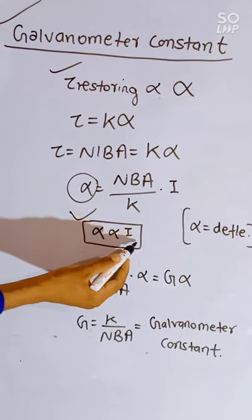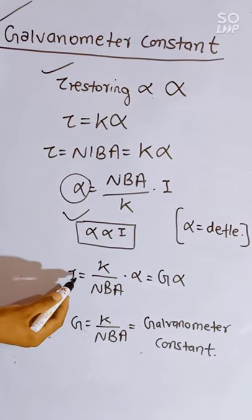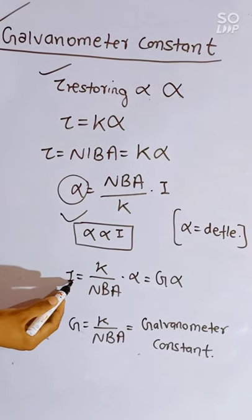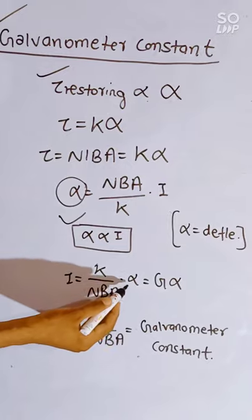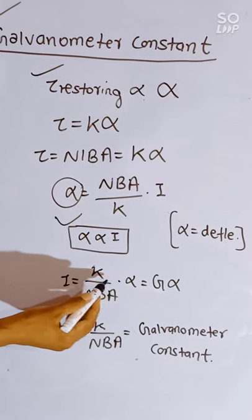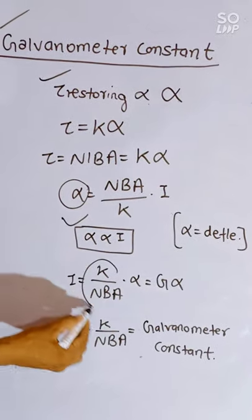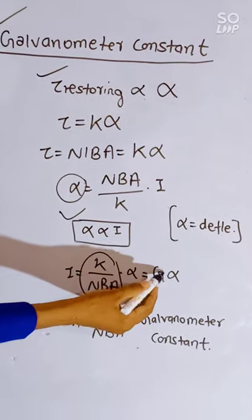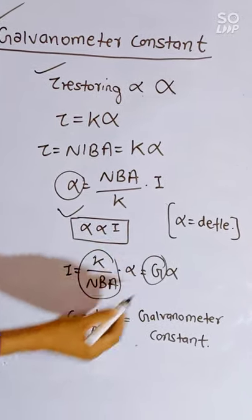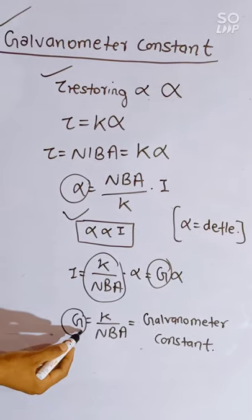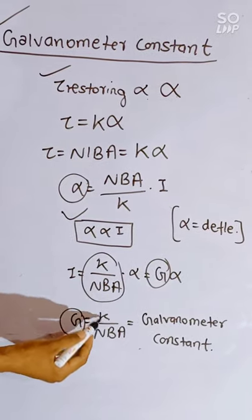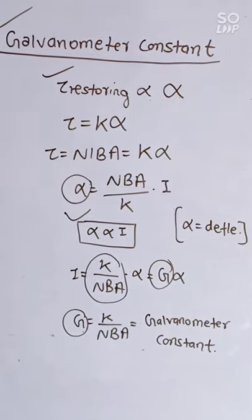This means deflection increases then current also increases. And current equals K upon NBA, multiplied by alpha, where NBA upon K is the value of G. We will write here: G is the galvanometer constant, that is K upon NBA.